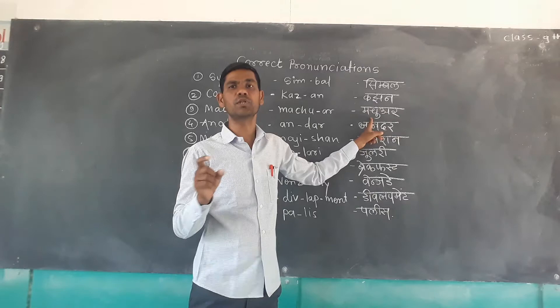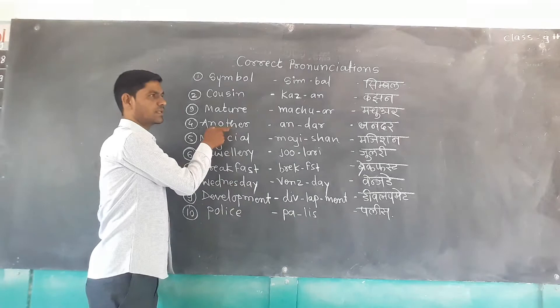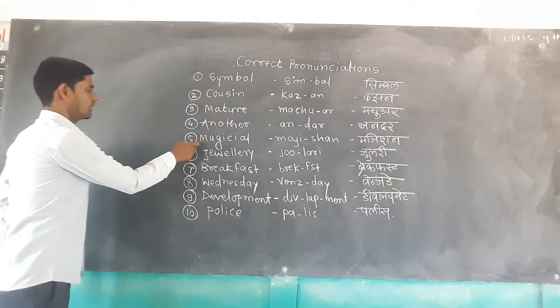Number four — we usually pronounce it as 'another,' spelled A-N-O-T-H-E-R. But this is not the correct pronunciation. The correct pronunciation is 'another.' It is 'another.'